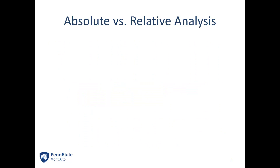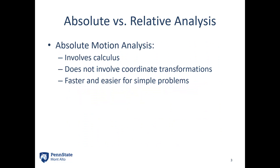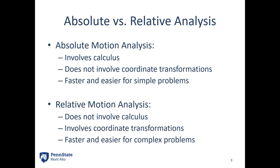Absolute versus relative motion analysis: absolute motion analysis does involve calculus — you're going to be taking derivatives of functions. It does not involve any coordinate transformations, so everything will be in x and y directions from the start, and it's generally faster and easier for simple problems. Relative motion analysis does not involve calculus; we have predefined functions. It does involve coordinate transformations, so things are going to be in the r and theta directions that we'll need to convert into x and y. Relative motion analysis is faster and easier for more complex problems.